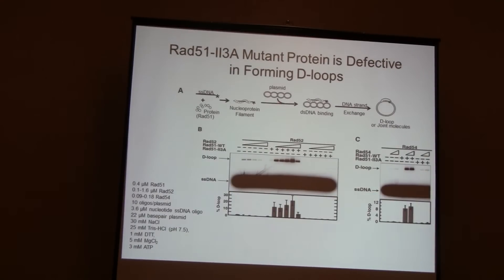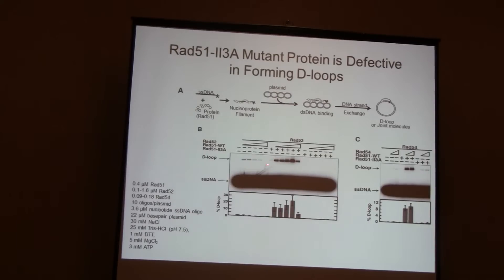The D-loop assay works by coating a radioactively labeled oligonucleotide with the protein to make a filament, then presenting it with a plasmid containing the same sequence. If the protein can perform homology search and D-loop formation, you're left with a joint molecule where the plasmid is radioactively labeled. Rad51 requires the cofactor Rad52 for activity in this assay. Our 23a mutant is defective — it has no D-loop activity regardless of cofactor used, essentially at background levels.